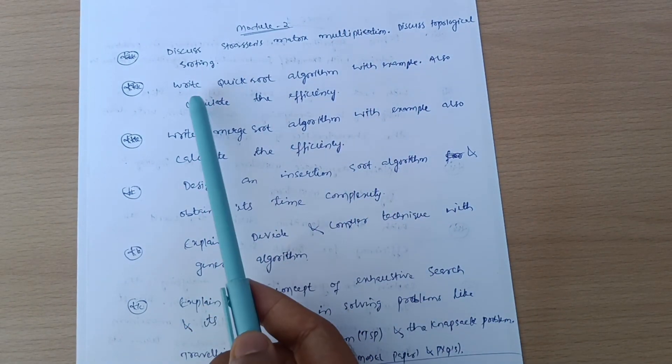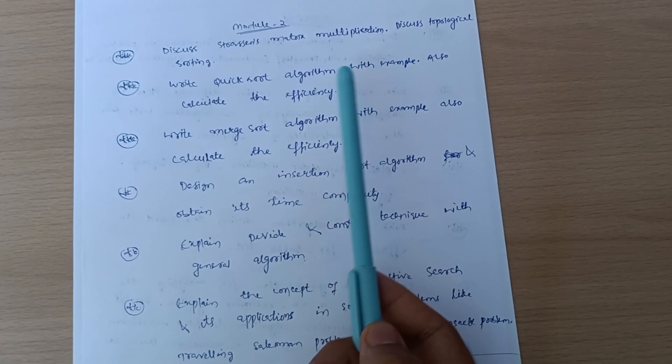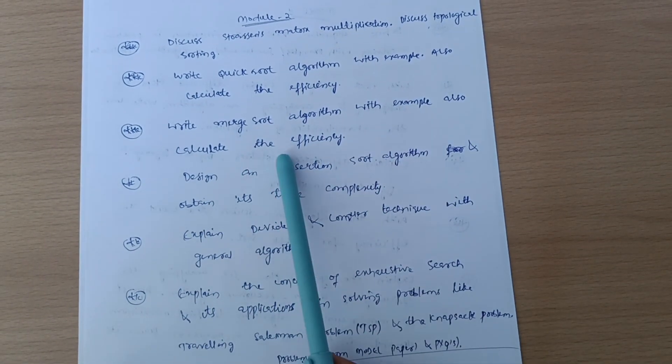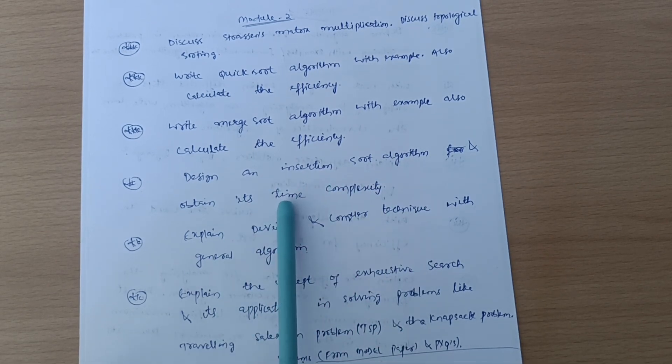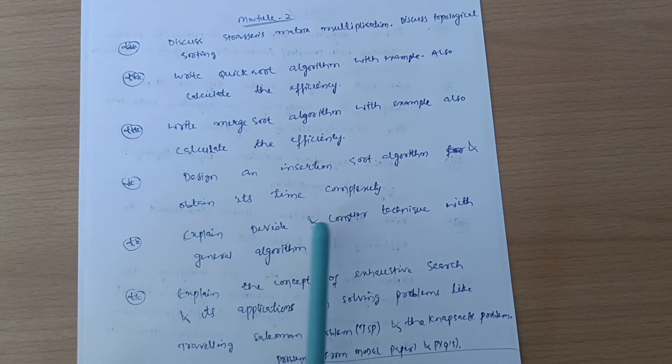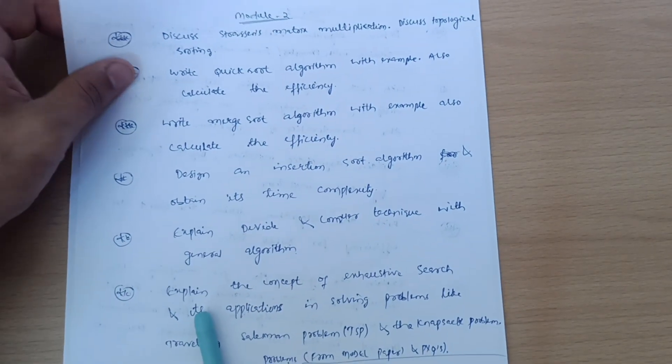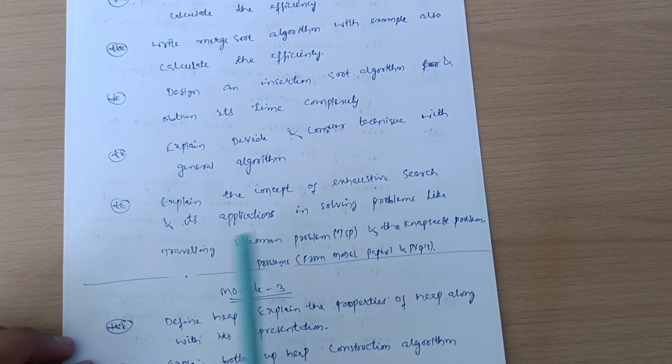Next is Module 2: Discuss Strassen's matrix multiplication, discuss topological sorting, write quick sort algorithm with example and calculate the efficiency, write merge sort algorithm with example and calculate the efficiency, design insertion sort algorithm and obtain its time complexity, explain divide and conquer technique with general algorithm.